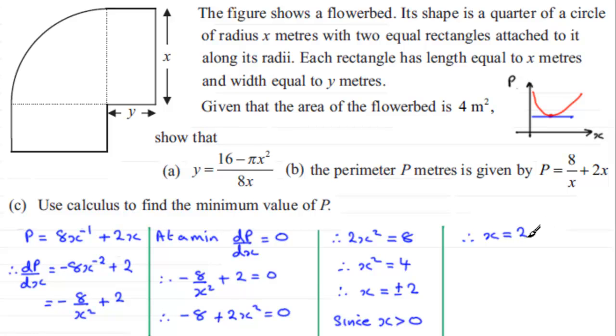And now that we've got x equals 2, we can find out what the perimeter is. So therefore, the perimeter P would be 8 divided by 2 plus 2 times 2. So in other words, you've got 4 plus another 4, which is going to be 8. So the perimeter is 8 metres.